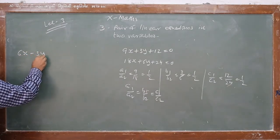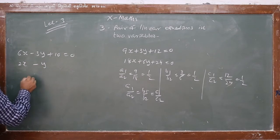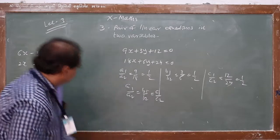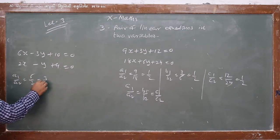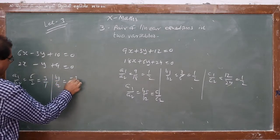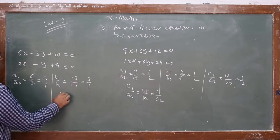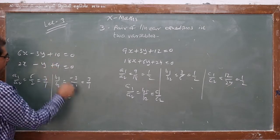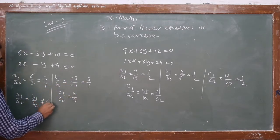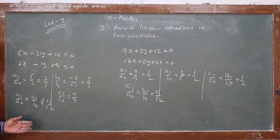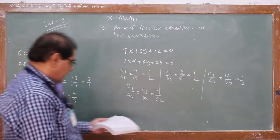Third sub-question: 6x − 3y + 10 = 0 and 2x − y + 9 = 0. Check a1/a2 = 6/2 = 3/1; b1/b2 = −3/−1 = 3/1 — both equal. Now c1/c2 = 10/9, which is different. So a1/a2 = b1/b2 ≠ c1/c2. This means there is no solution; both lines are parallel and the pair of equations is inconsistent.